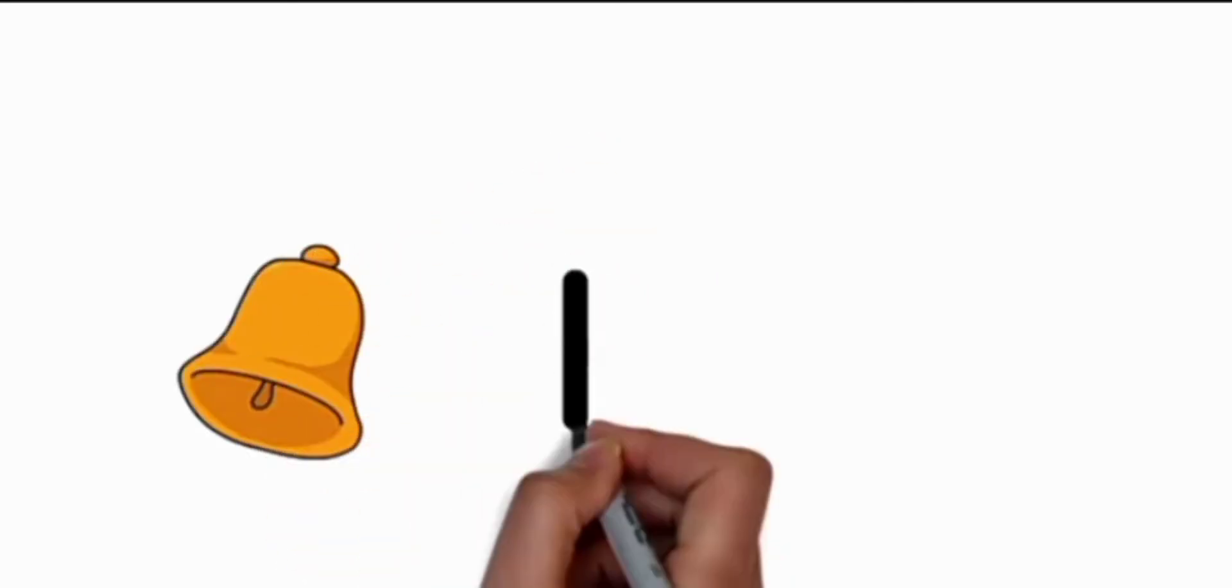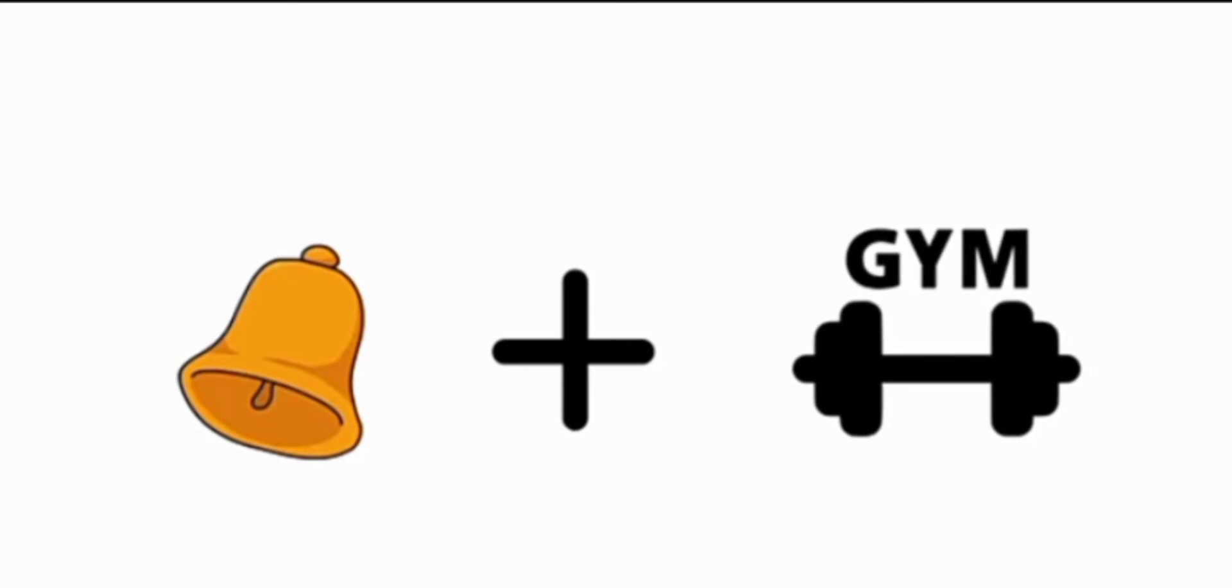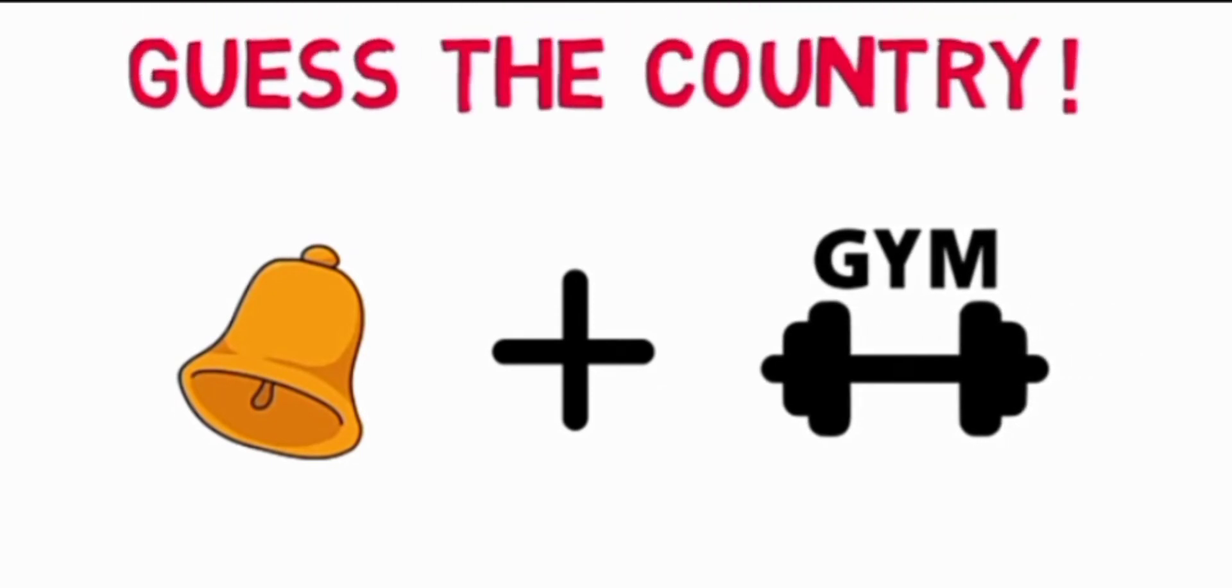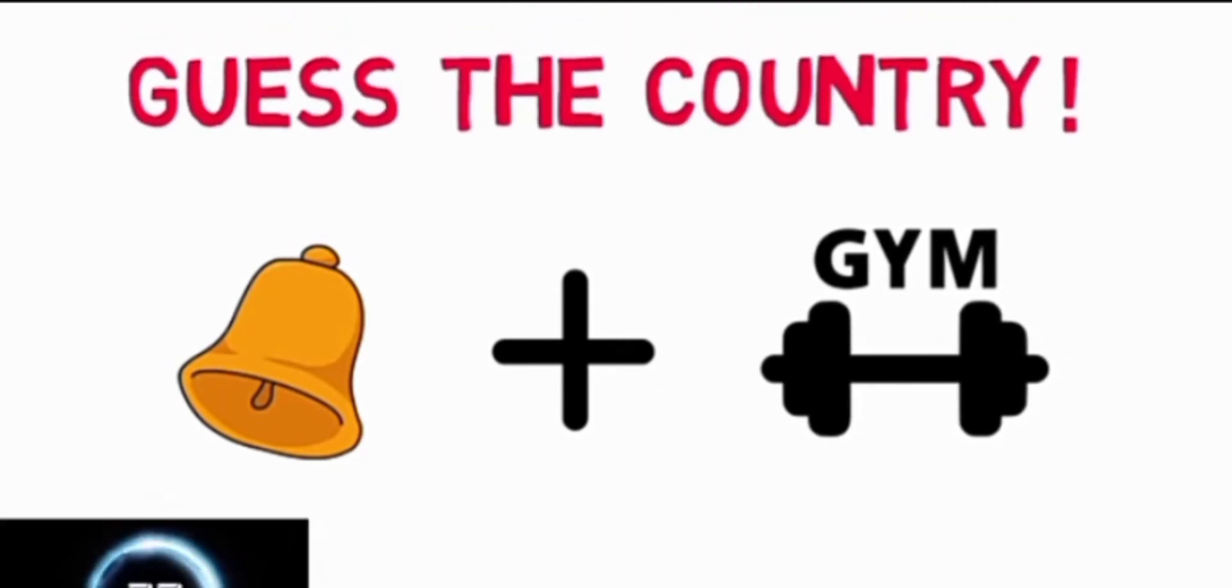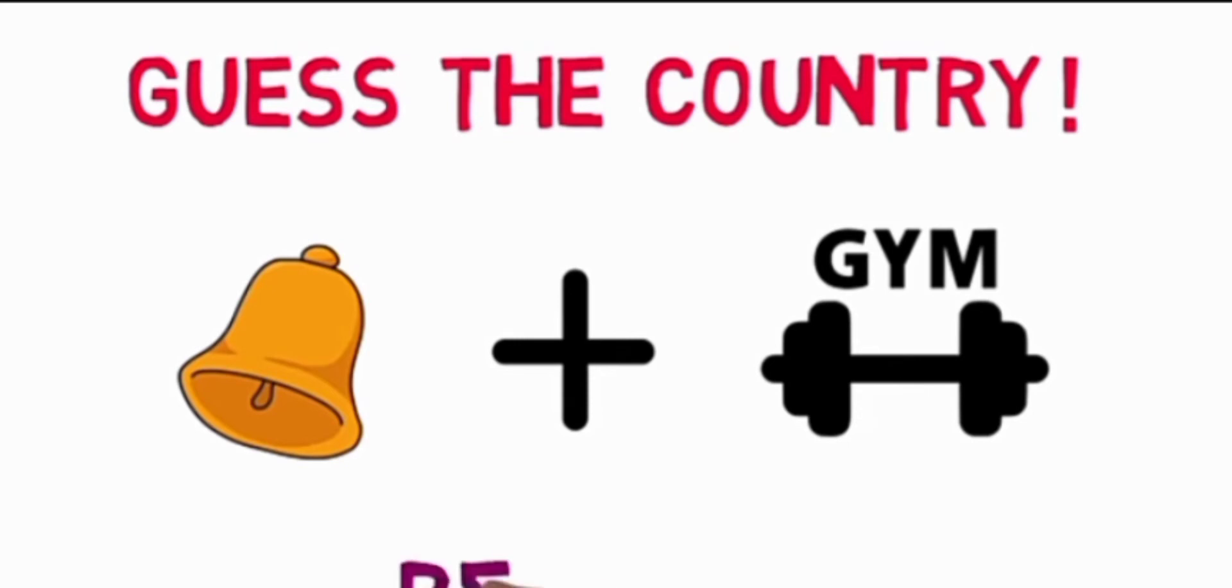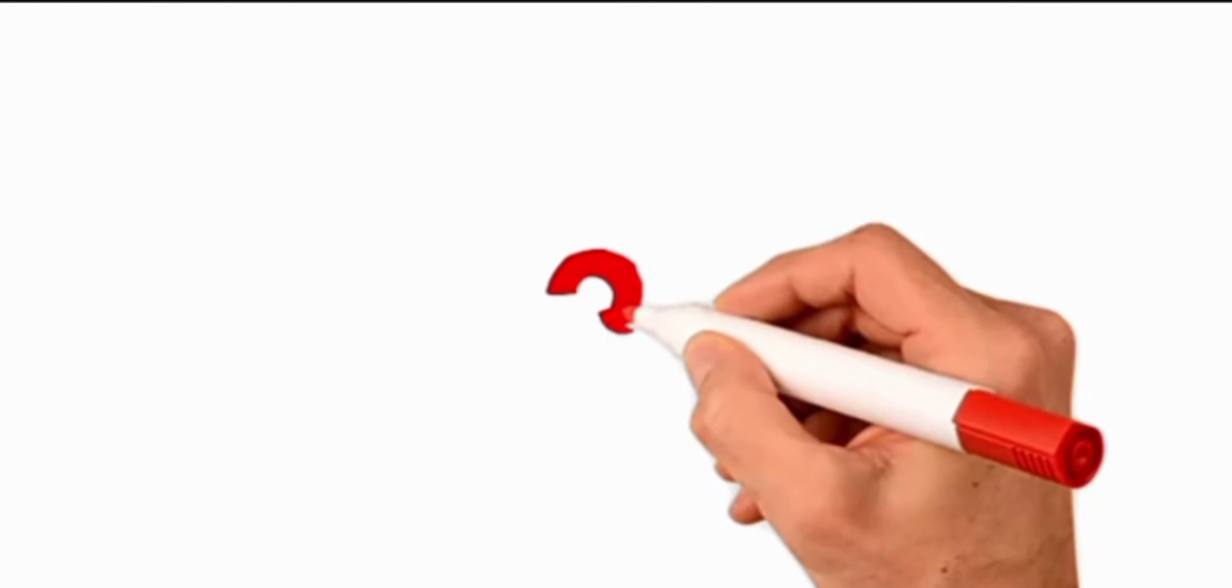Number two: there is a bell and a gym. You have two emojis here—you have a bell and a gym. You have 10 seconds to focus on this. Guess this country: bell and gym. The answer is Belgium.